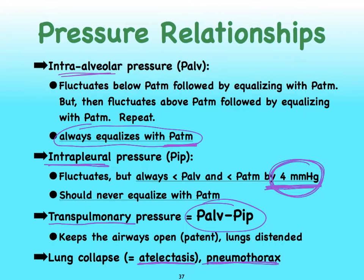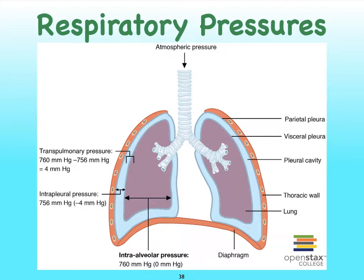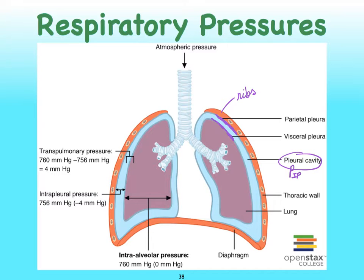Let's now apply all of this information to an image and then a graph. Here we're looking at the ribs that surround our lungs, and we have our parietal pleura, with the inner layer being the visceral pleura. The space in between these two represents the pleural cavity, where we're going to see our intra-pleural pressure. Inside of the lungs themselves, we have our alveolar pressure, and outside we have our atmospheric pressure.